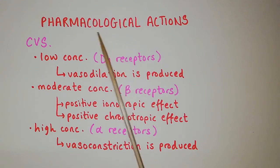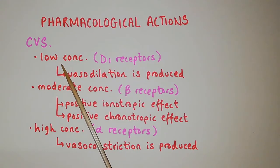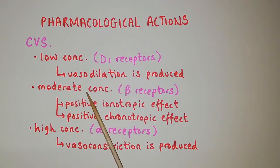Coming to its pharmacological actions in the cardiovascular system, in low concentration when dopamine receptors are stimulated, vasodilation is produced. In moderate concentration when beta receptors are stimulated, positive ionotropic effect and positive chronotropic effect is produced.